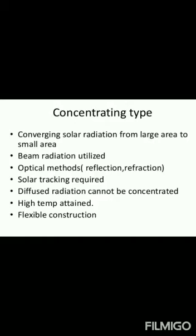The concentrating type collectors focus solar radiation from a large area to a small area. Beam radiation is utilized using optical methods such as reflection. Solar tracking is required — the collectors move in the direction the sun moves. Diffused radiation cannot be concentrated, and high temperatures can be achieved with this inflexible construction.